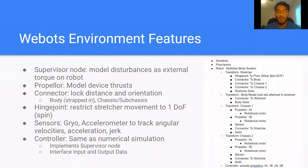Here is our master node tree for the WEBOTs environment. Some key features of this environment are the supervisor node, which we use to add direct disturbances as the external torque, the connector, which we use to strap in our body and attach our device to the stretcher model, and the hinge joint, which restricts the degrees of freedom to just spin. This emulates the spin of the system about a cable. We also have sensors to track angular velocities, accelerations, and jerks to feed to the actuators. WEBOTs also uses the same controller as our numerical simulation and handles the data collection.